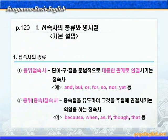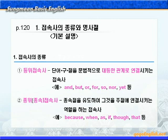접속사는 크게 나누어 단어와 단어, 구와 구, 절과 절을 문법적으로 대등하게 연결시키는 등위접속사, 즉 and, but, or, for, so, nor, yet 이런 것들이 있죠. 그 다음에 종속절을 유도하여 주절에 연결시켜주는 역할을 하는 종위접속사 또는 종속접속사라고 하는데, 예를 들면 because, when, as, if, though, that 이런 것들이 있죠.